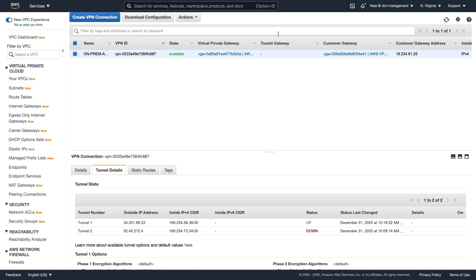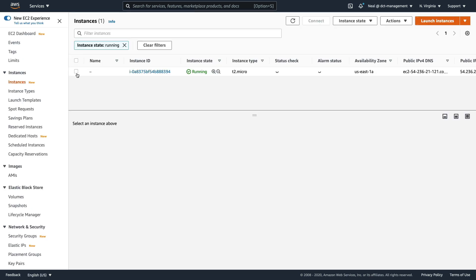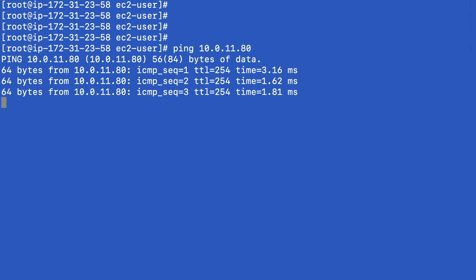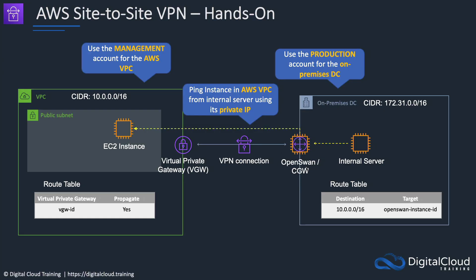If the tunnel doesn't come up, go back and check every step because something along the way has not been executed correctly. But this one is up. Let's go back to EC2 and copy the private IP address of our instance on the AWS VPC. Let's try to ping that address — and we get a good response. So back in our diagram, we set up the OpenSwan server, the virtual private gateway, and the customer gateway — which is a logical object in the VPC corresponding to the actual EC2 instance. We've established a VPN connection and updated the route propagation. We just pinged from the OpenSwan instance itself using the private IP of the EC2 instance, which tells us it's definitely going over the VPN connection.